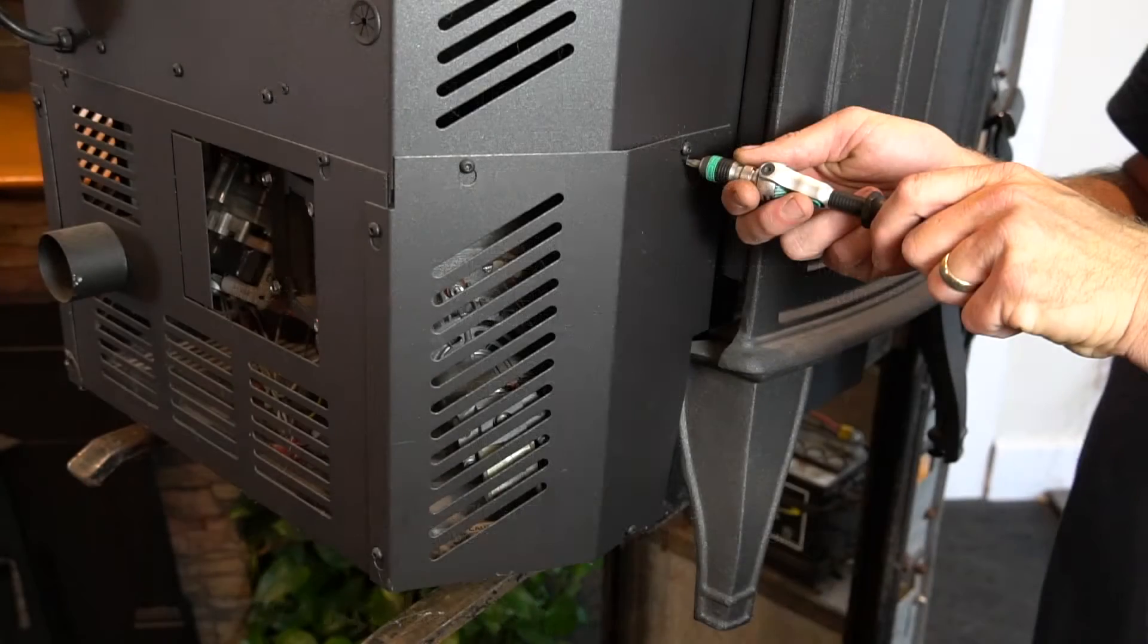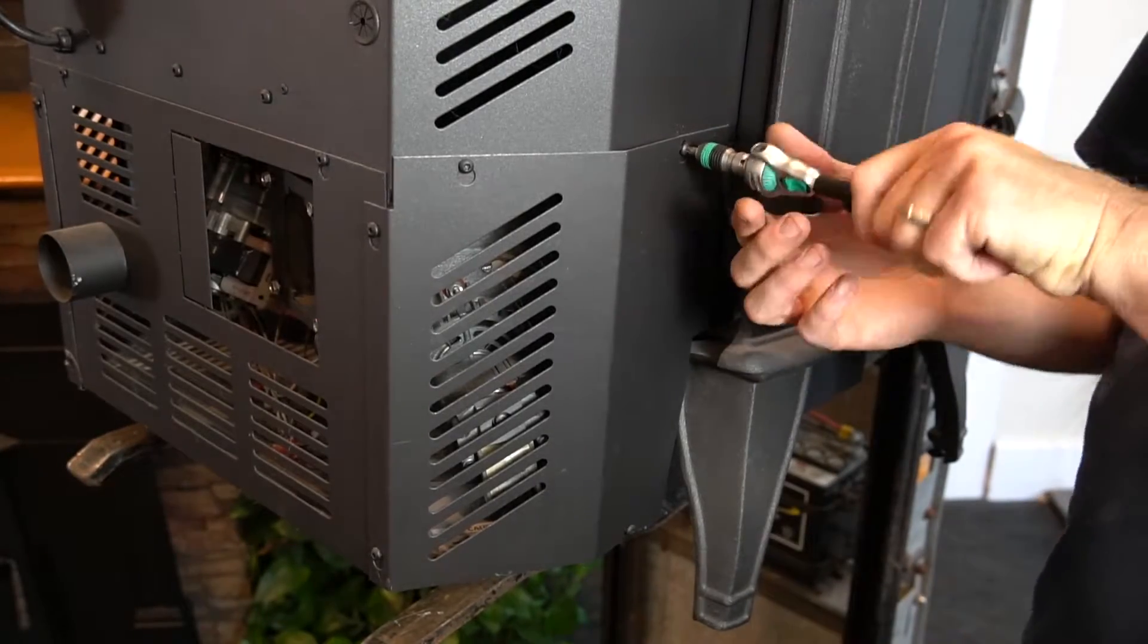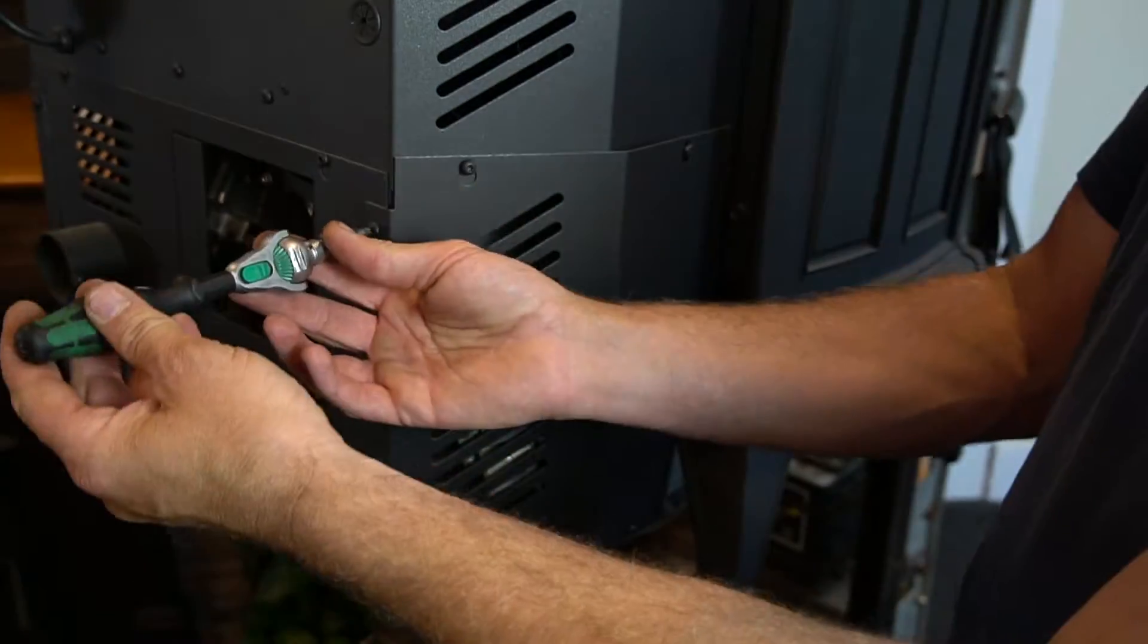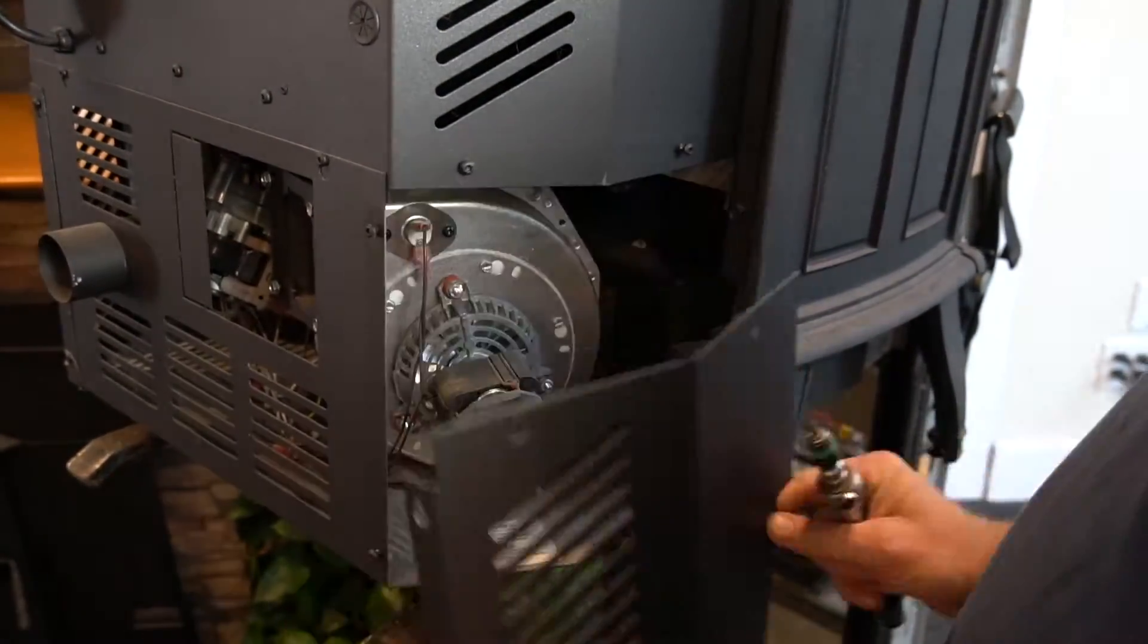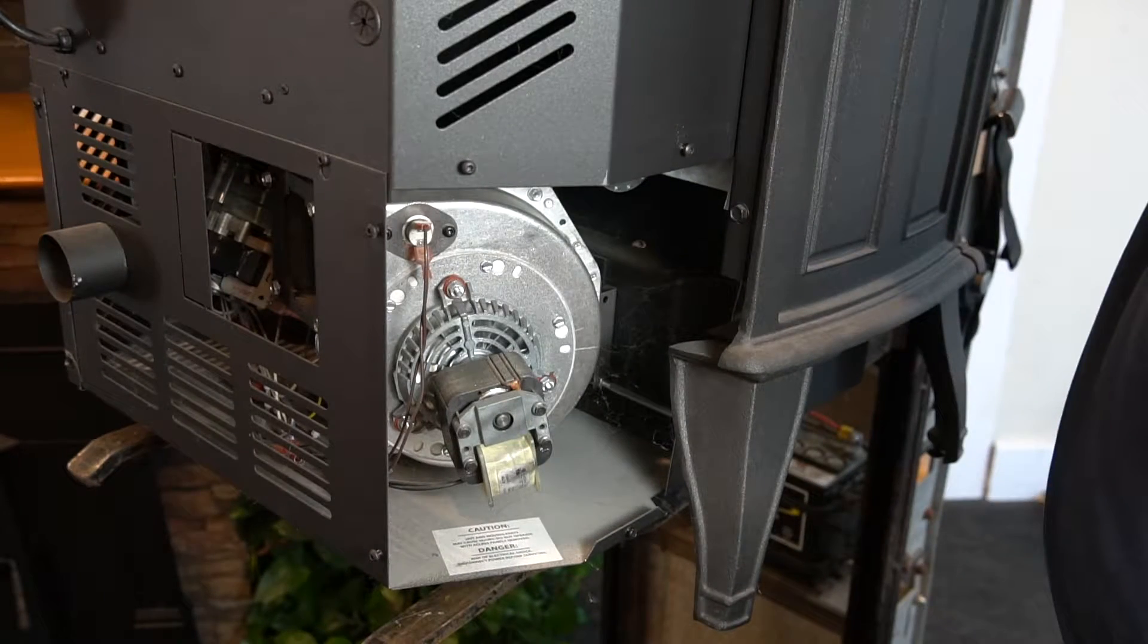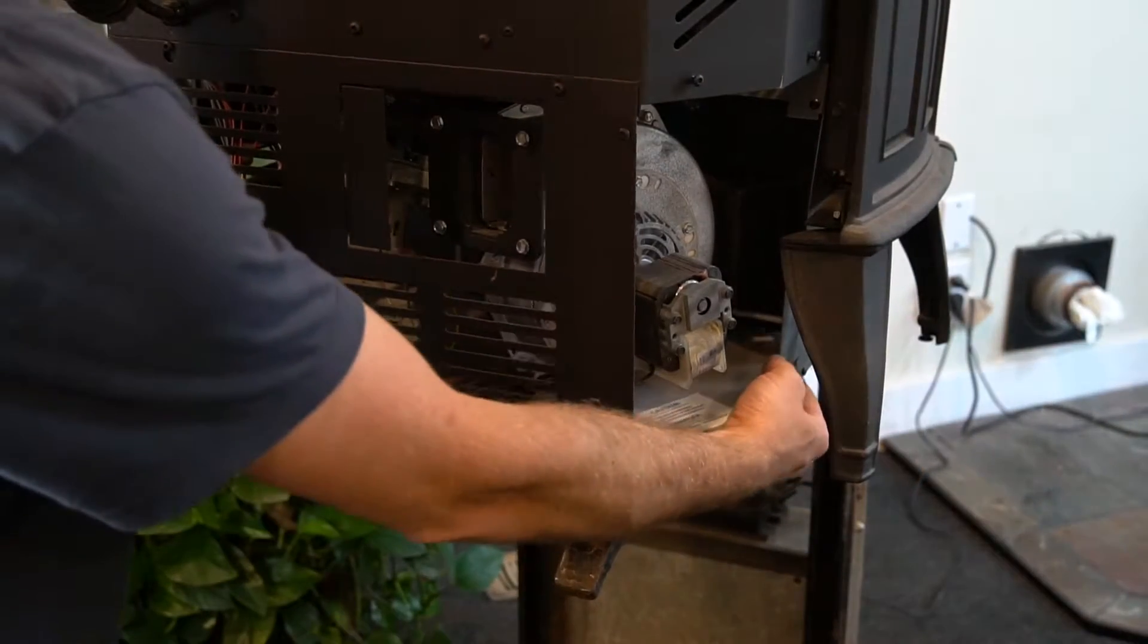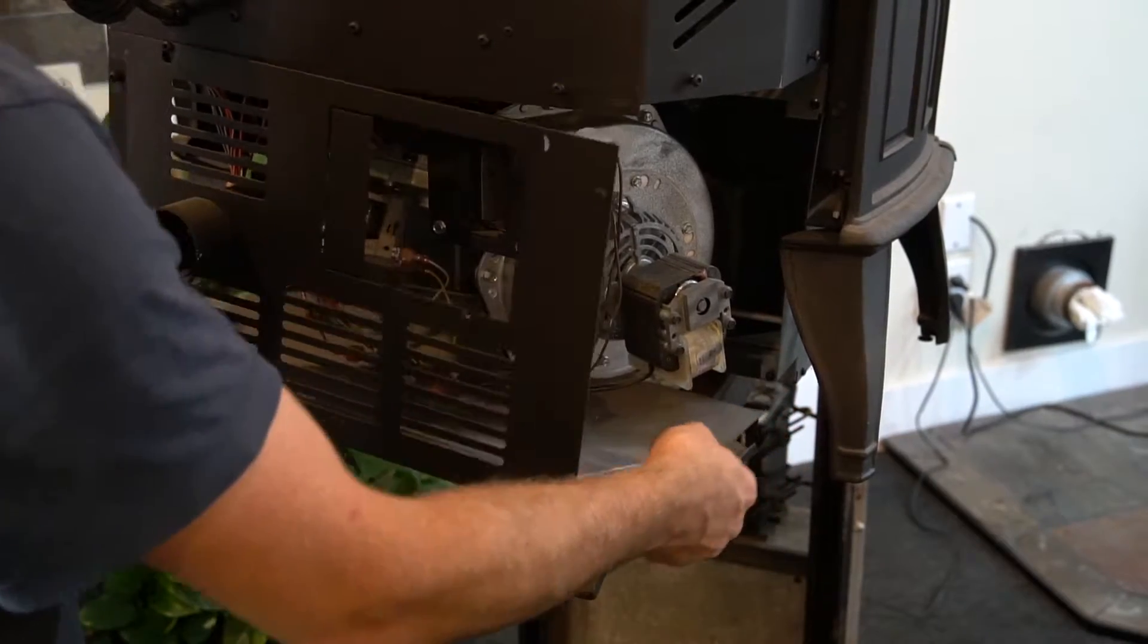All of these stoves will have the motor located in exactly the same spot. It's going to be on the back left-hand side, and you're either going to remove a panel, open a door, or in some cases, such as this Enviro Empress, you're going to have to remove the whole rear panel to access the blower.